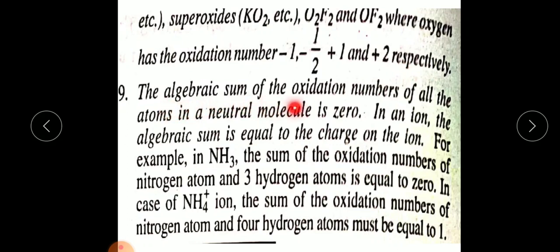Rule 9: The algebraic sum of the oxidation numbers of all atoms in a neutral molecule is zero. For example, in NaCl the sum equals zero. In an ion, the algebraic sum equals the charge on the ion. For ammonia (NH₃), the sum of oxidation numbers of nitrogen and three hydrogen atoms equals zero. For ammonium ion (NH₄⁺), the sum must equal plus one.